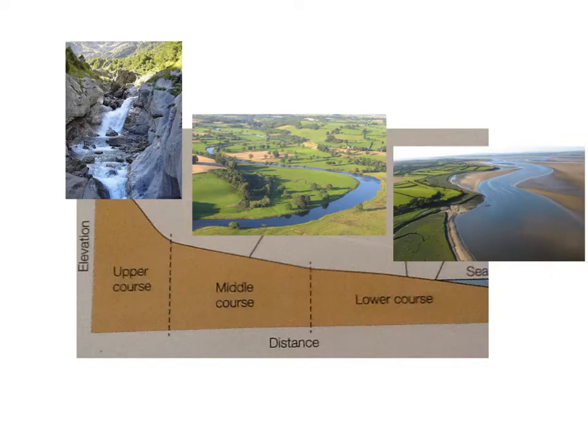Let's have a look at some photographs of the gradient. In the upper course you can distinctly see a very steep gradient — in fact there's a waterfall. In the middle course the river is flowing down in a shallow gradient, and in the lower course the gradient is much more flat.